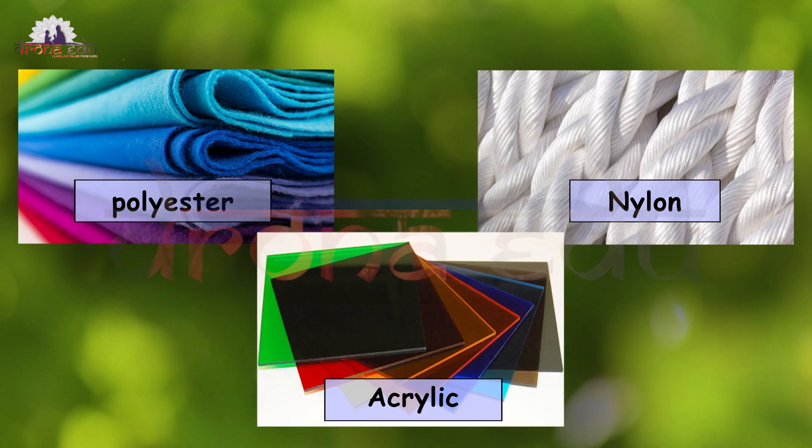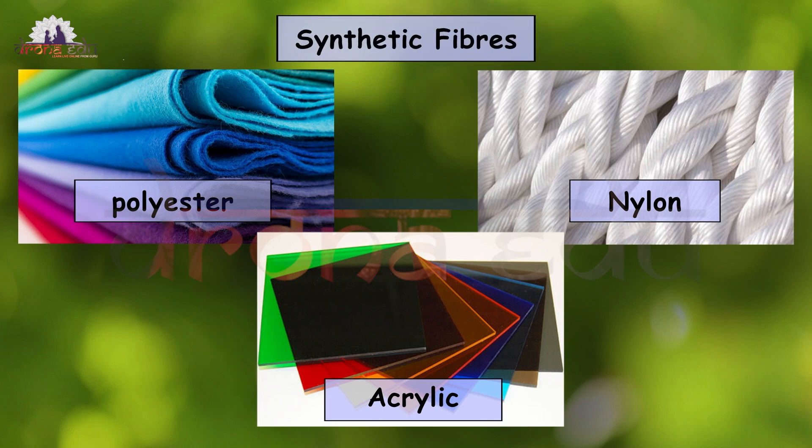Some fibers like polyester, nylon, and acrylic are neither obtained from animals nor plants. These are obtained from chemical sources and are called synthetic fibers.